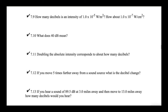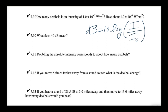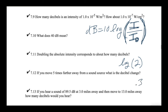Doubling the absolute intensity corresponds to about how many decibels? Decibels equals 10 times the log of a ratio — the new intensity over the old intensity. If you're doubling, the new intensity is twice the old, so you put in 2 for the ratio. The log of 2 is basically 0.3, times 10 gives approximately 3 decibels. So every time you double the absolute intensity, you go up by about 3 decibels.